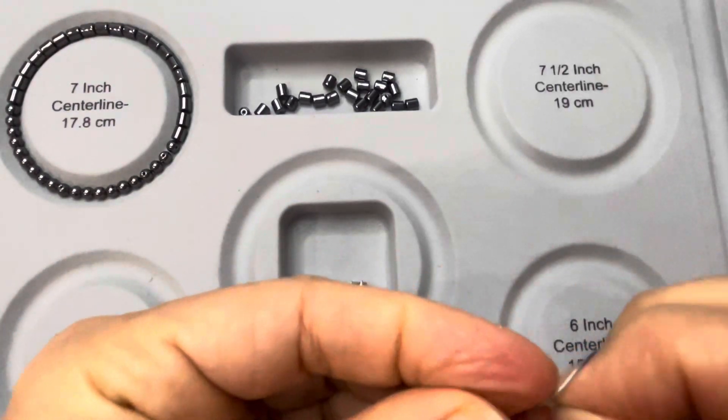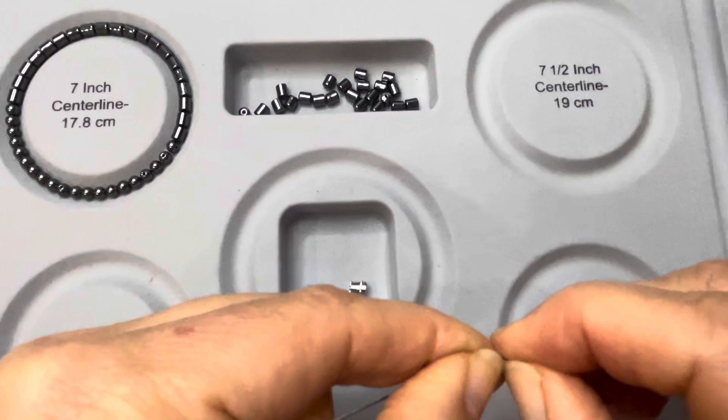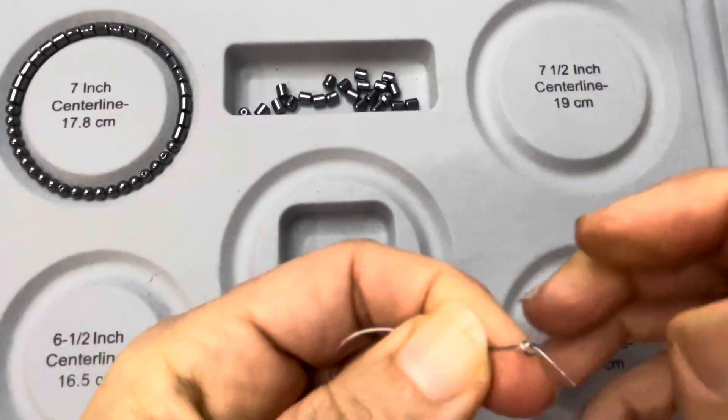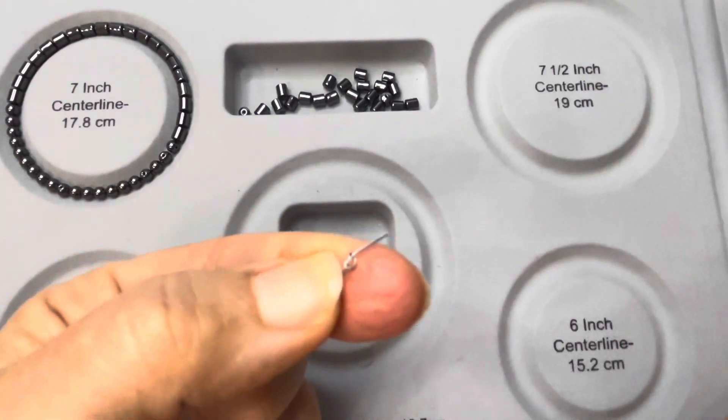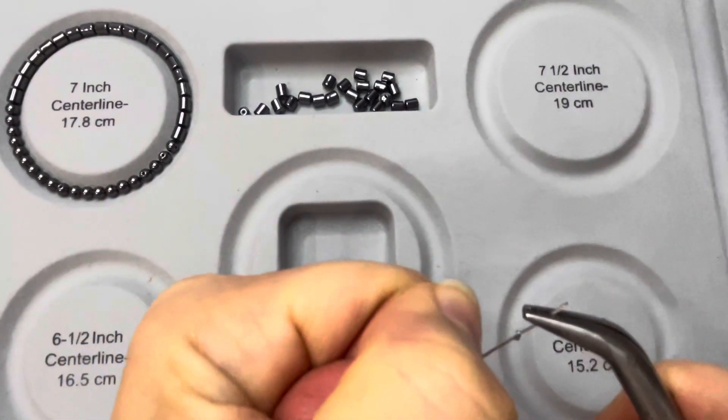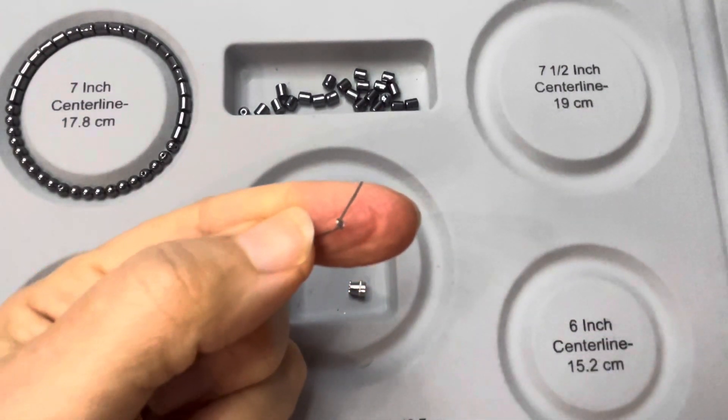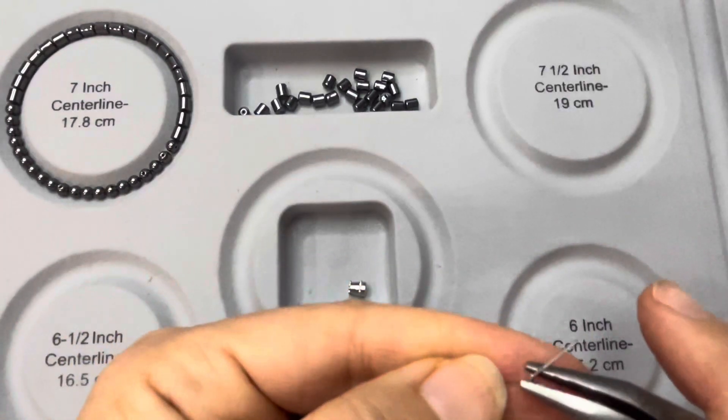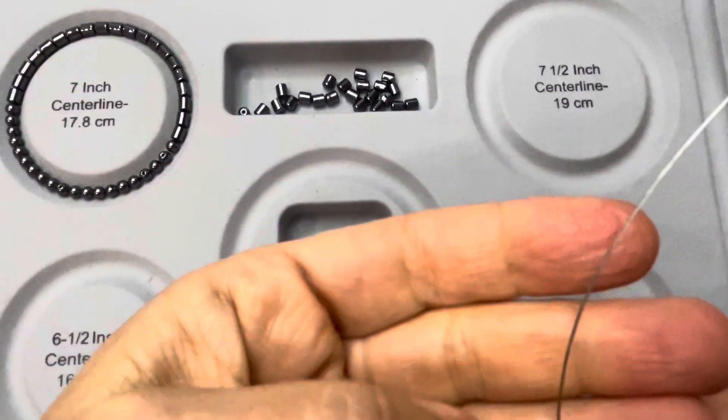Feed the wire through and tie a knot as you normally would with any type of material. Just a simple little knot, and make sure it's very tight. Pull it with your pliers if you need to. That's going to be bigger than the actual little hole that you fed it through, so the wire won't slip through that half of the barrel.